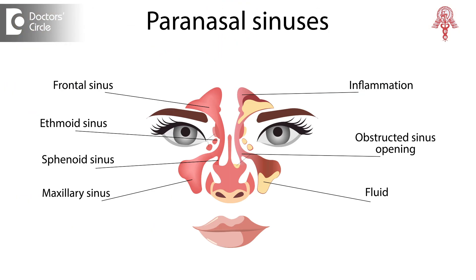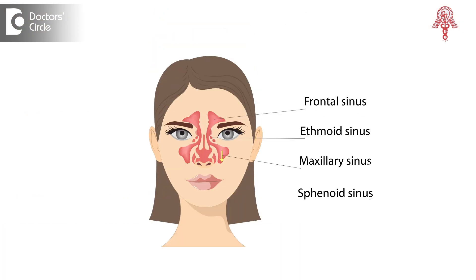Sinusitis happens only when there is lowered air in the sinuses and bacteria go inside and start ruling the roost there. Bacteria usually cannot survive in a normal sinus. When the air quality drops inside the sinus and air pressure is less, then fungi or bacteria can grow, and as a result you end up with full-blown sinusitis.